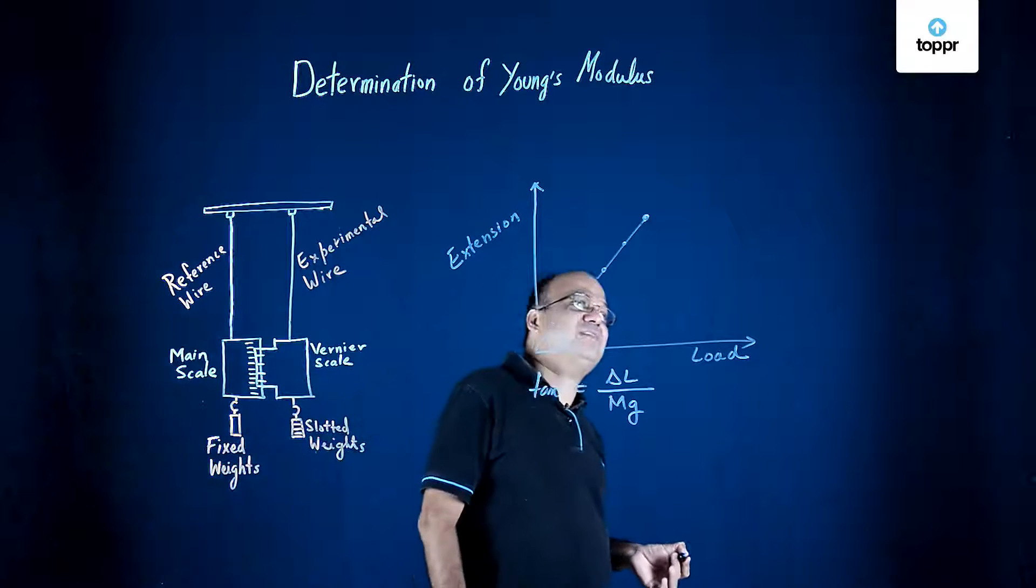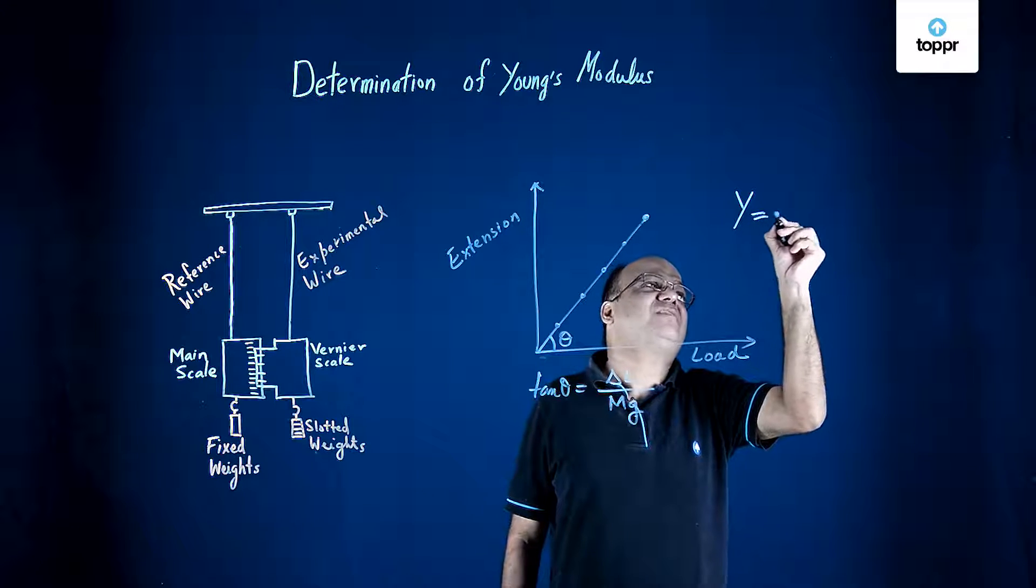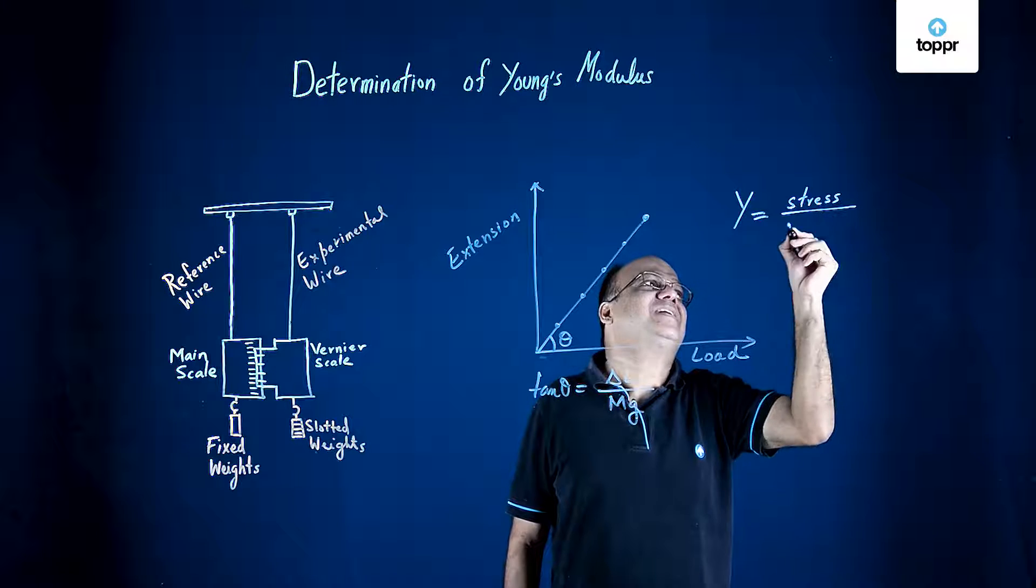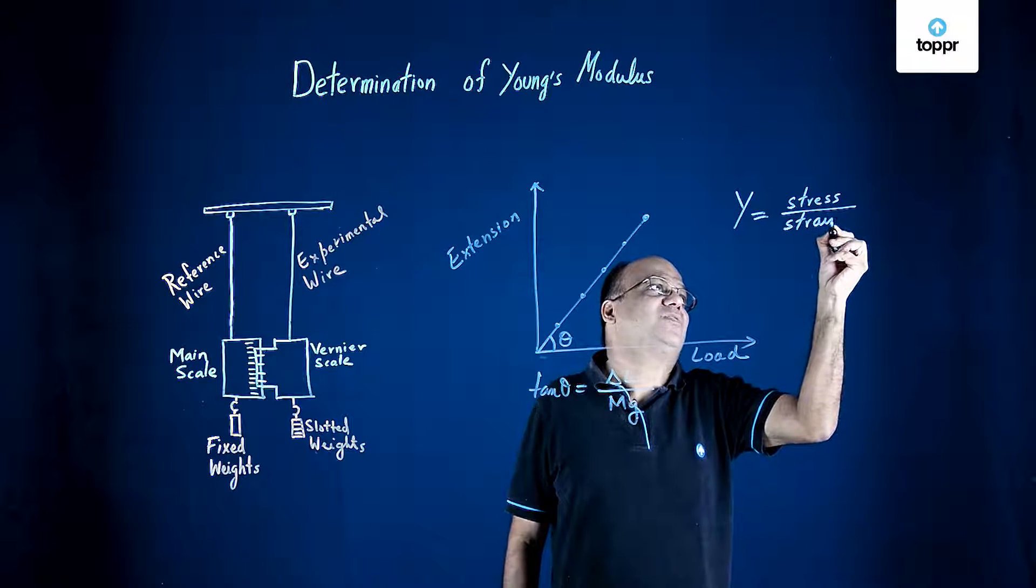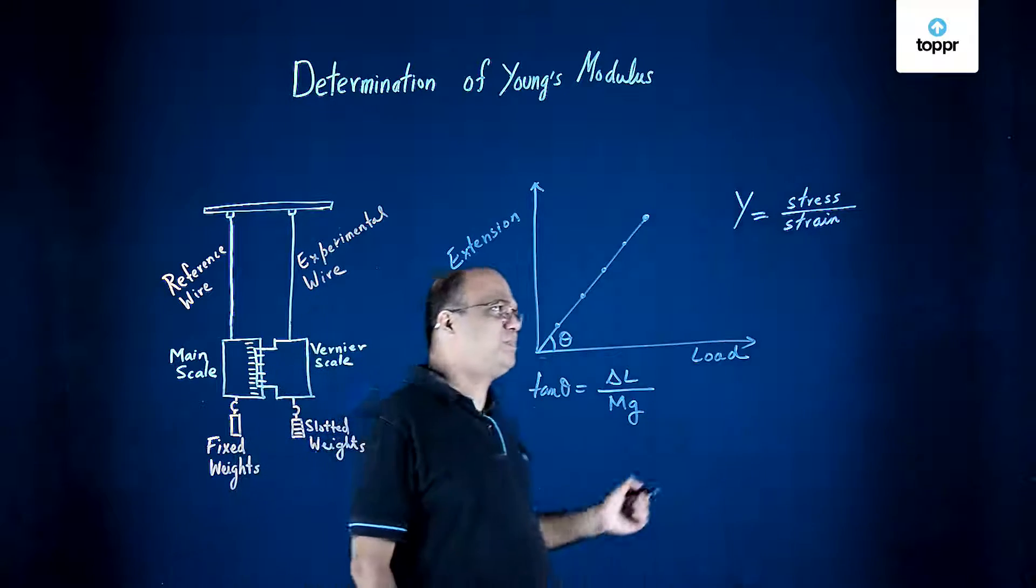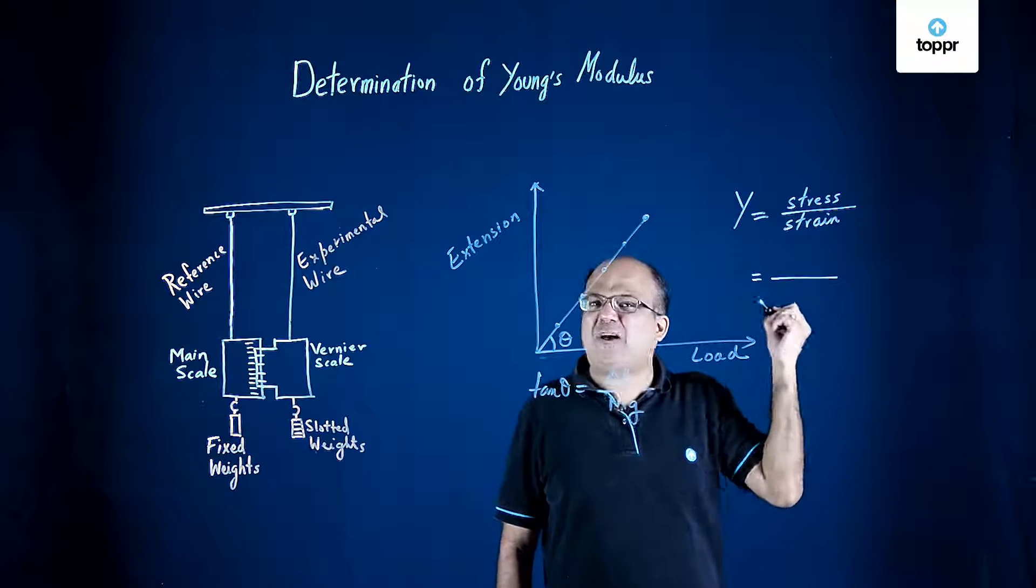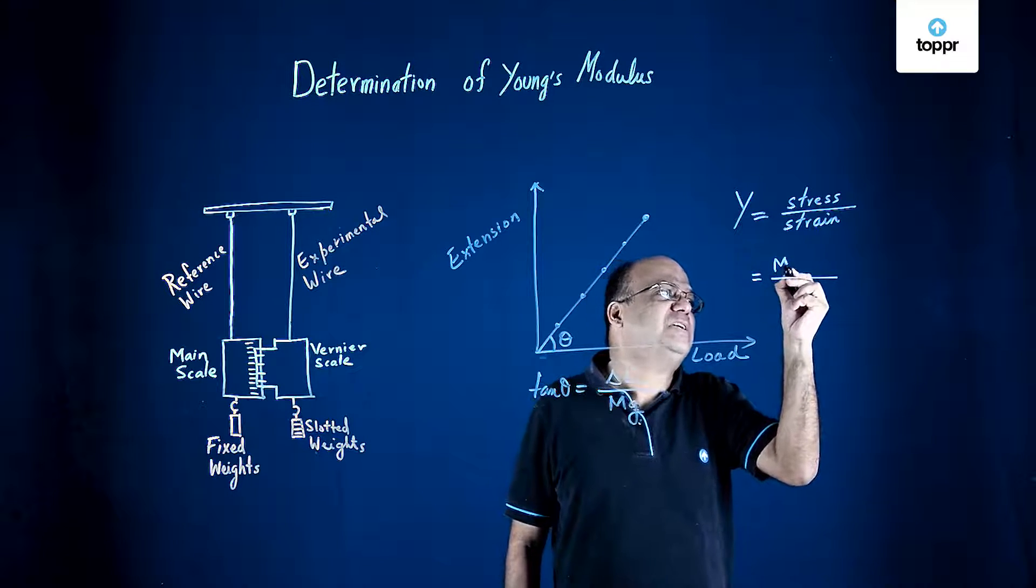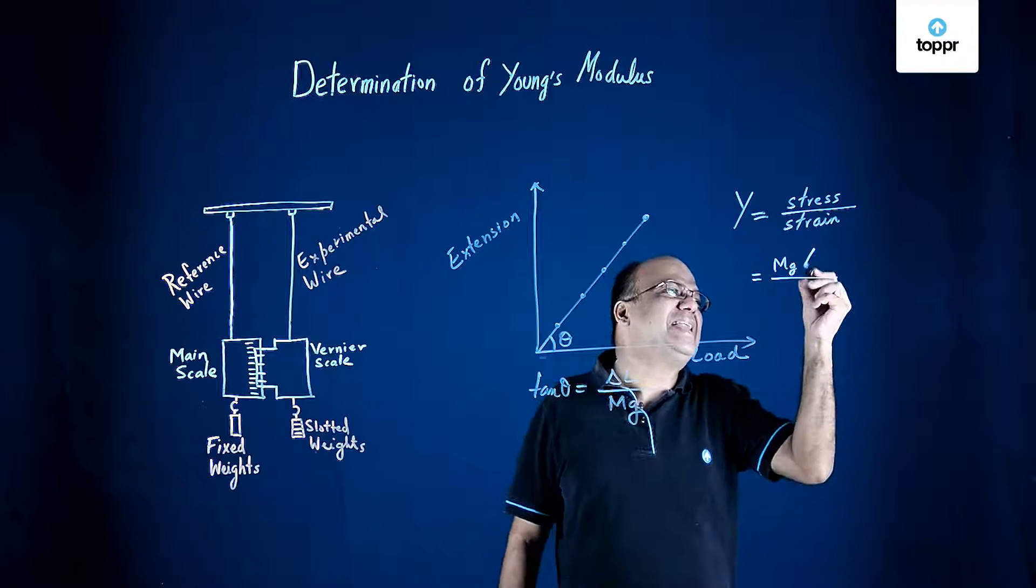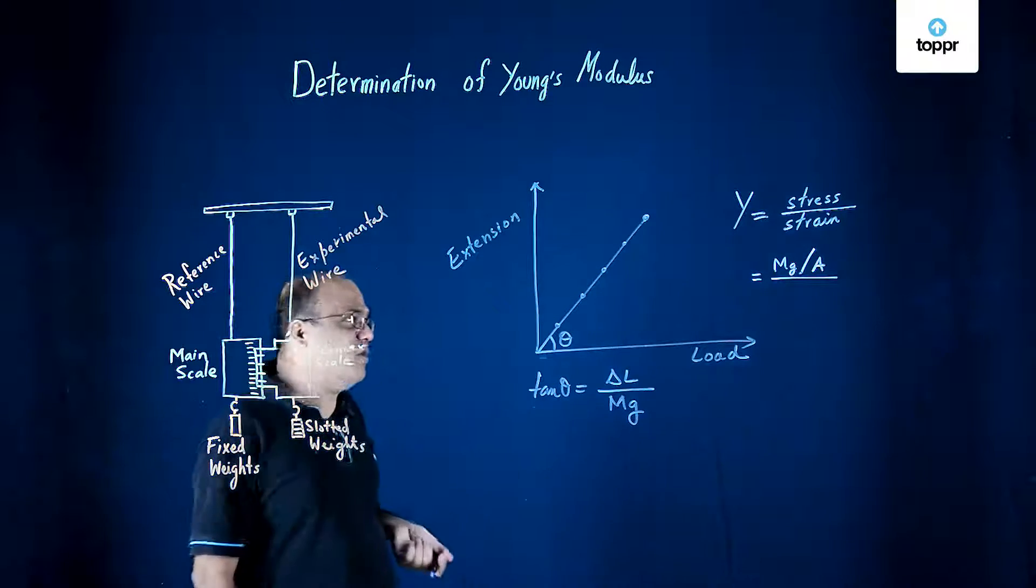But we want to calculate Young's modulus. What is Young's modulus? Stress by strain. Stress by strain is the modulus of elasticity, so stress by strain is Young's modulus. What is the stress here? Stress means force upon area.